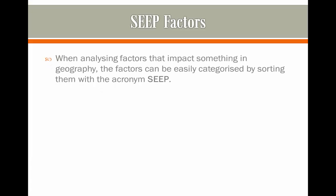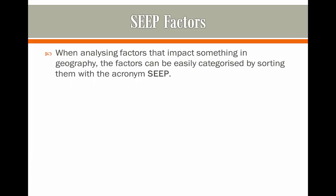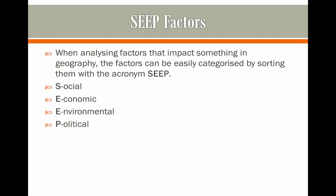As we have seen earlier on the course, most events that occur in geography are going to be classified with impacts known as CEEP impacts — an acronym standing for Social, Economic, Environmental, and Political. So the S stands for social, the E for economic, the other E for environmental, and the final P for political.